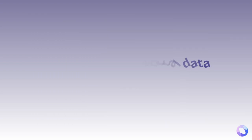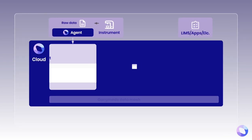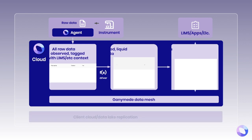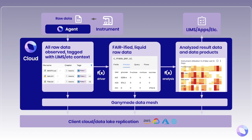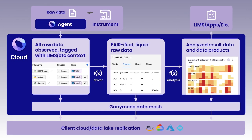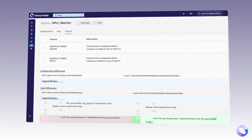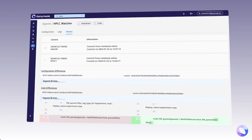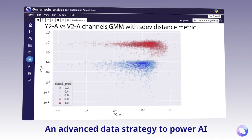What about a central data science or IT team? Every single data point in Ganymede is always fully reproducible and traceable, from analyzed data to raw source data. Every version of the logic is saved in a GitHub repo. This forms the basis of an advanced data strategy to power AI.